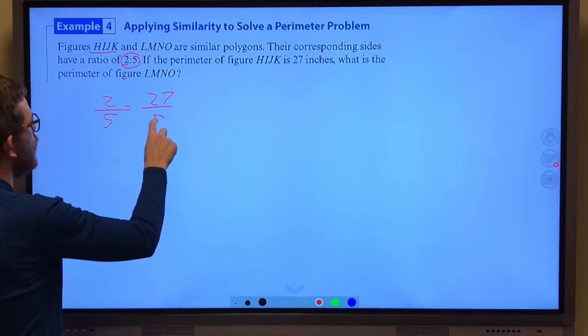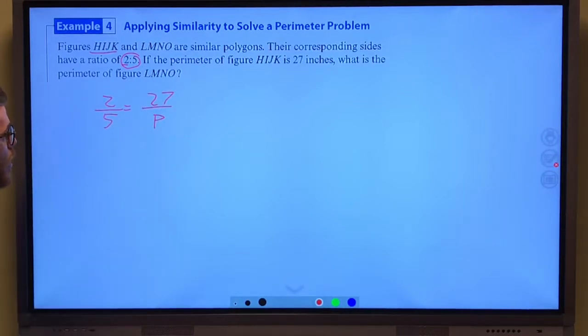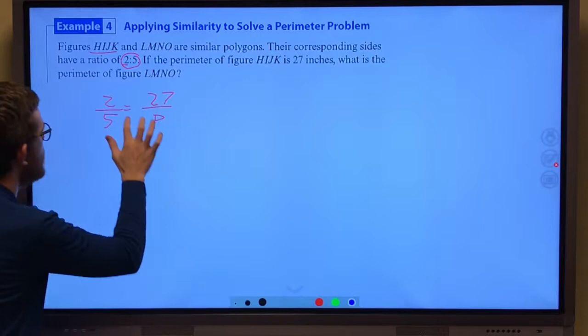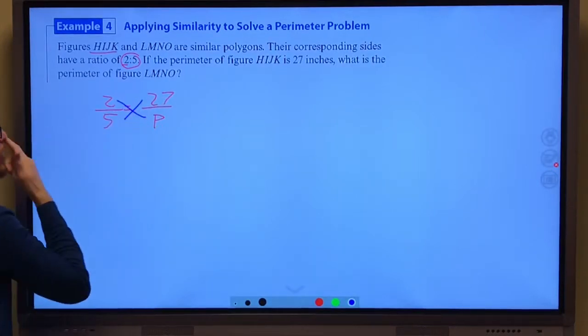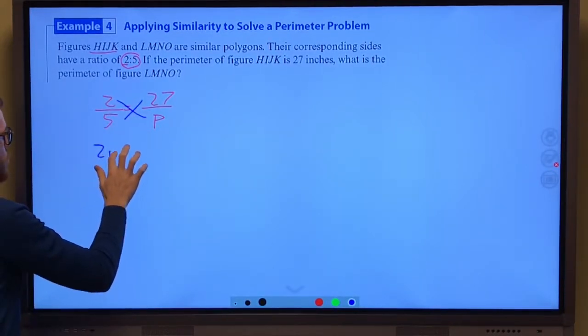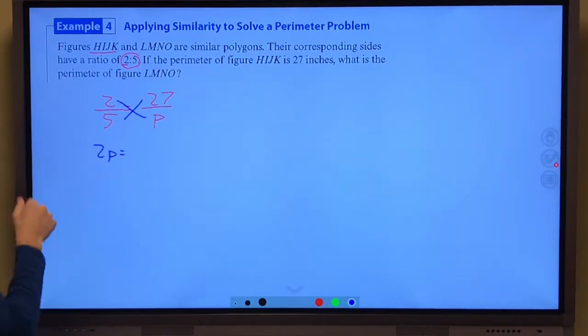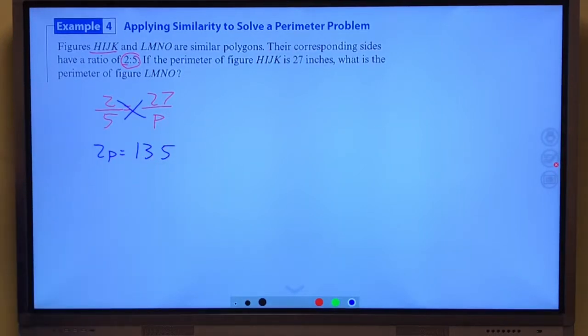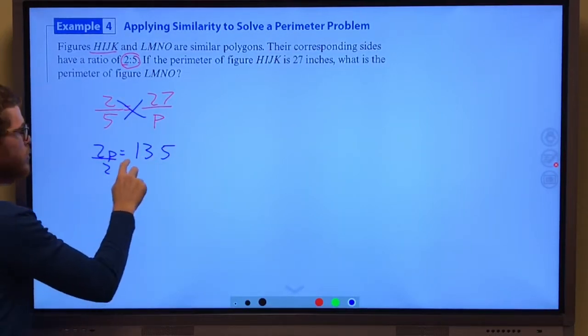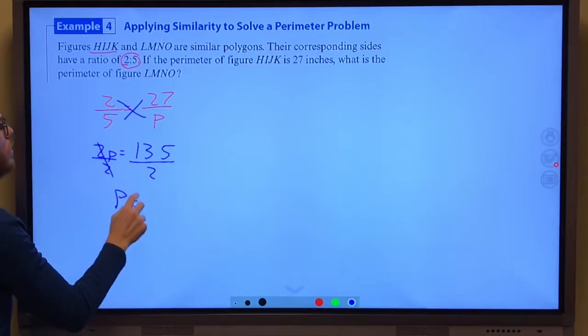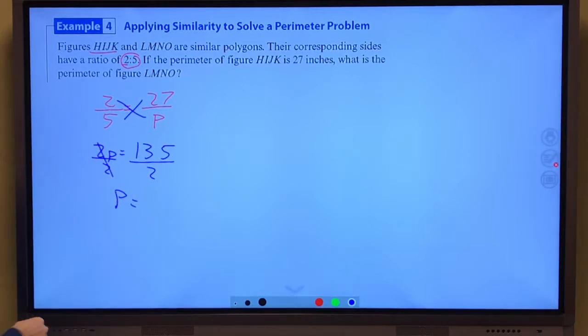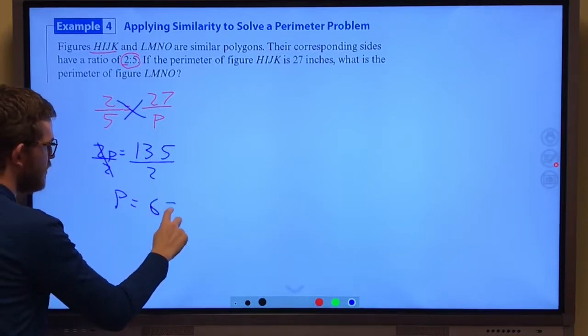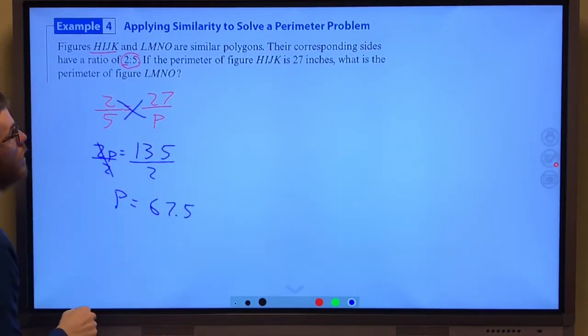So the perimeter of LMNO is what we're looking for. We can cross multiply. P times 2 of course is 2P. 5 times 27 would be 135. We divide both sides by 2. The perimeter of LMNO would be 67 and a half inches.